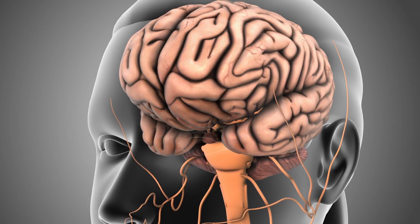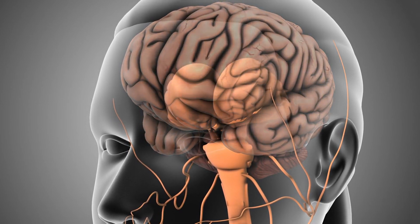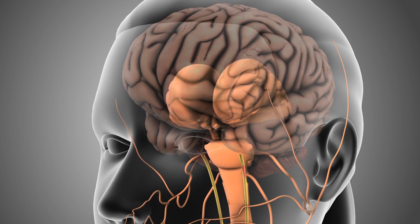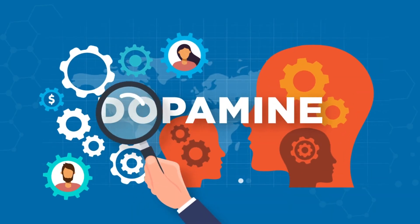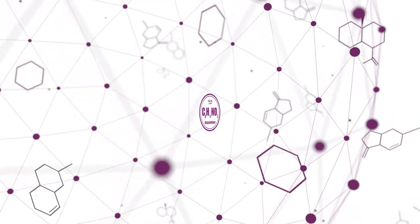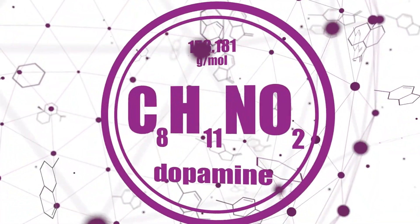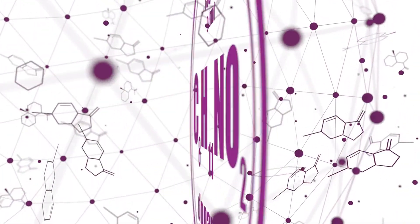Dopamine is often called the feel-good neurotransmitter because it's involved in reward, motivation, and pleasure. It's crucial for movement and emotional responses. Imbalances in dopamine levels are linked to conditions like Parkinson's disease and schizophrenia.